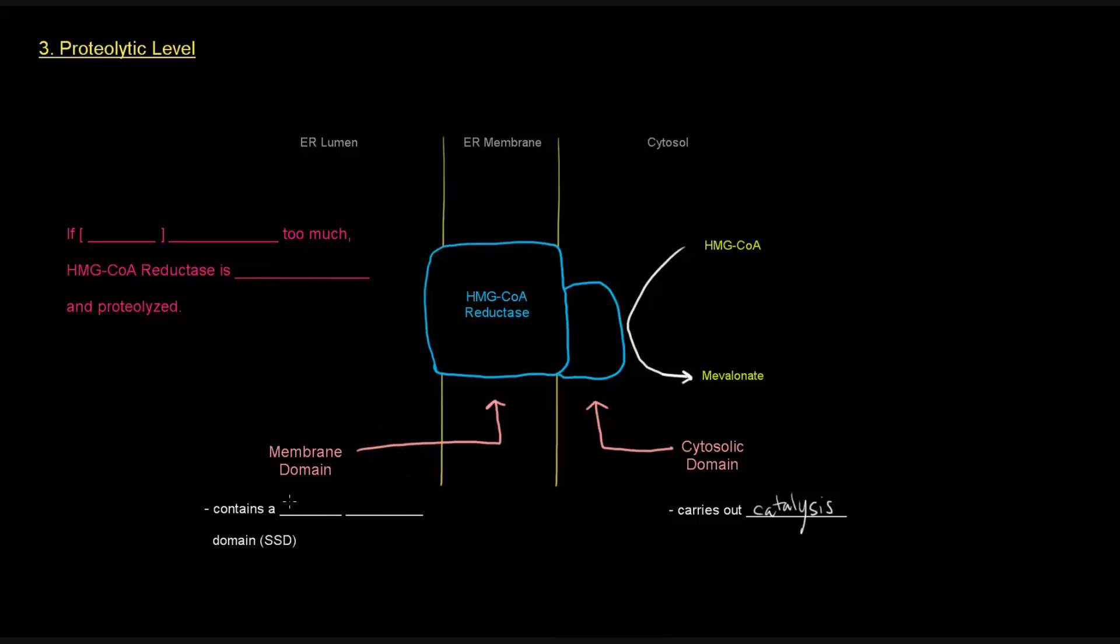This membrane domain contains a sterol-sensing domain. So it detects sterol levels. So if the sterol concentration is increasing or increases too much, then the HMG-CoA reductase is ubiquitinated and proteolyzed. It's broken down. Because if there's a bunch of sterol around, we don't need to make more.